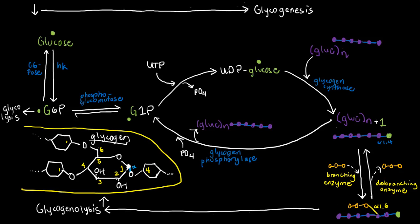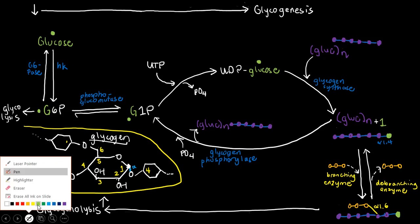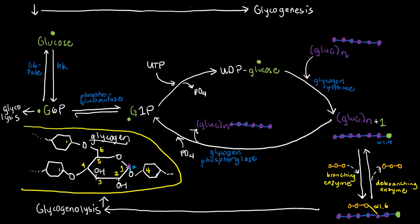In glycogen, we normally have three carbons which are bonded to something else. We have carbon one, carbon four, and carbon six. As a quick review of glycosidic bonds, remember that glycosidic bonds are named after the carbons that are connected. For example, this glycosidic bond here — since it's a bond between carbon four and carbon one — we call it an alpha-1,4 glycosidic bond.